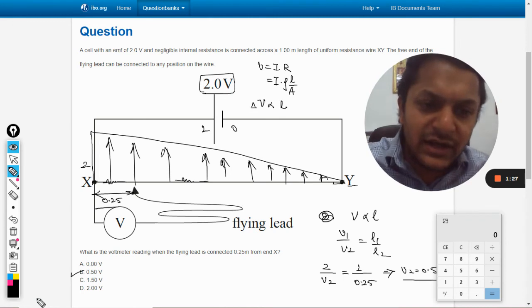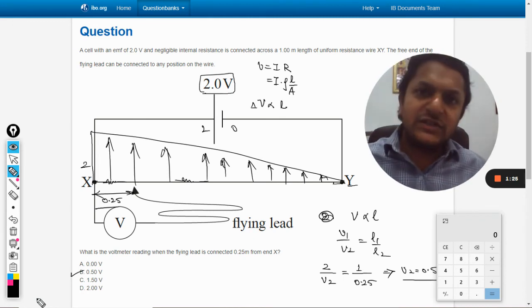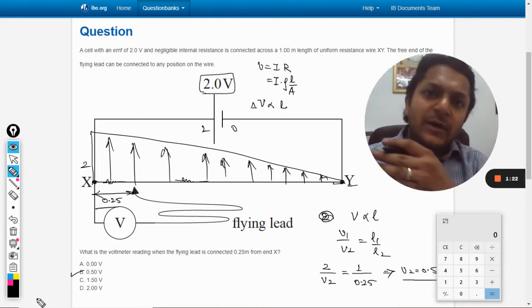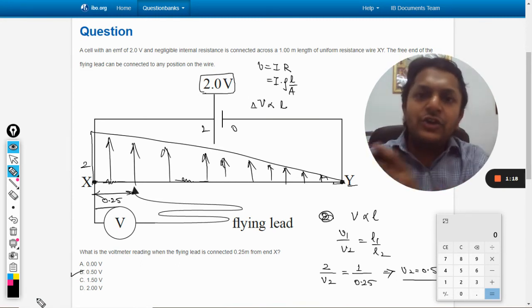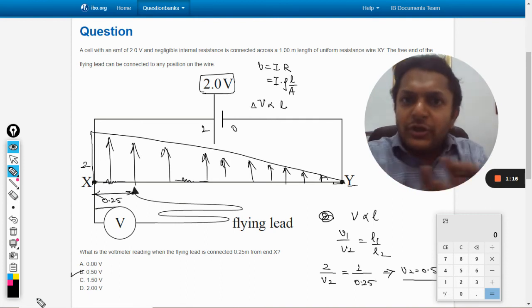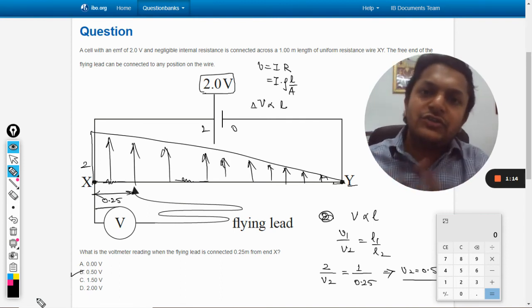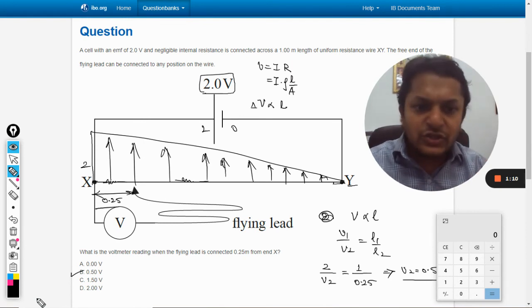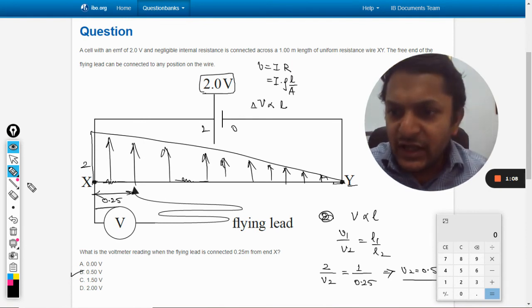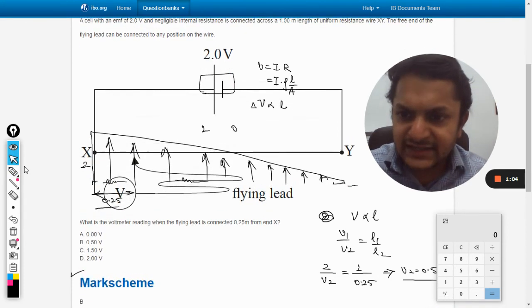Our answer will be B. It's a very simple question, straightforward, directly proportional relation. V is proportional to L. You reduce the length by 0.25 and you reduce the potential difference by 0.25. That is the concept, so it will be 0.5.